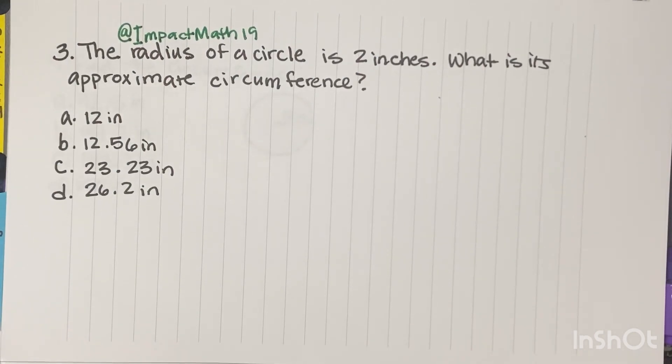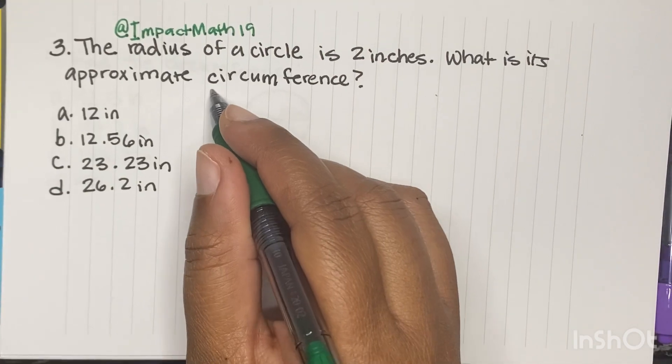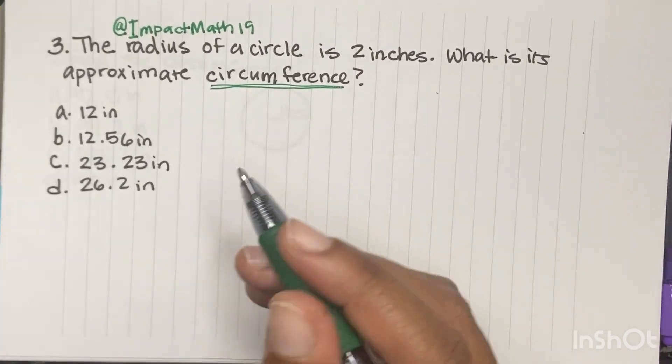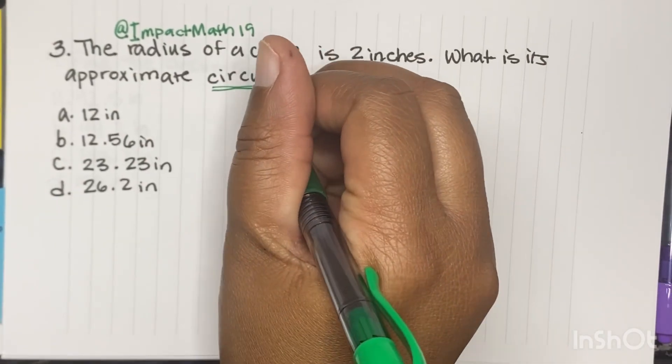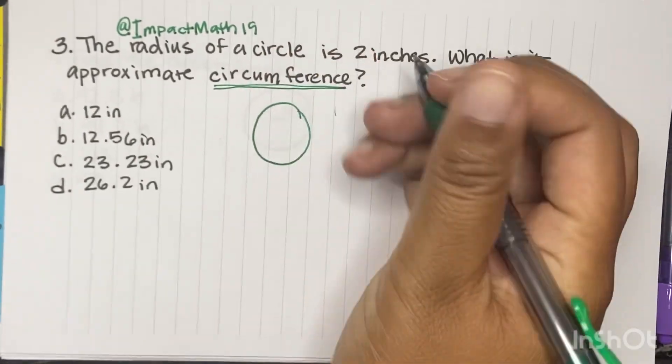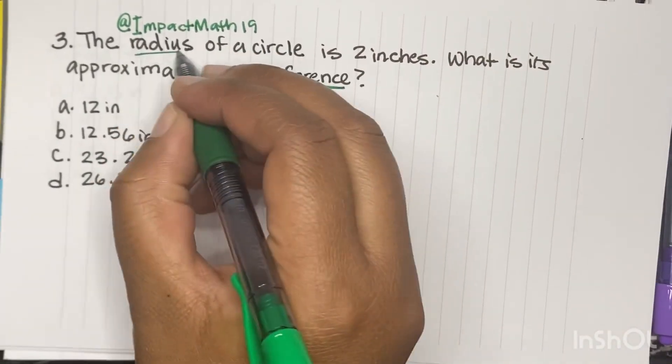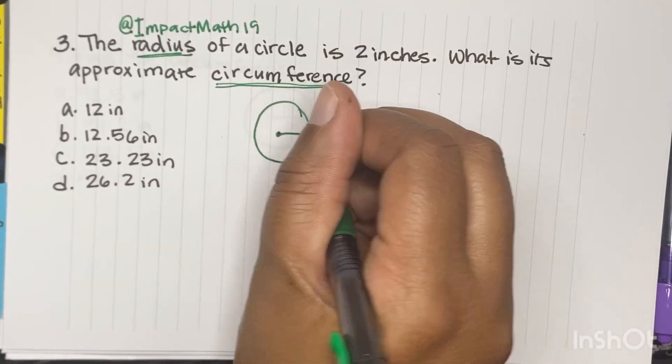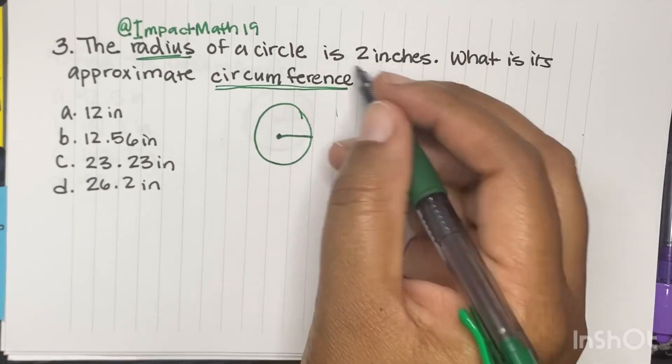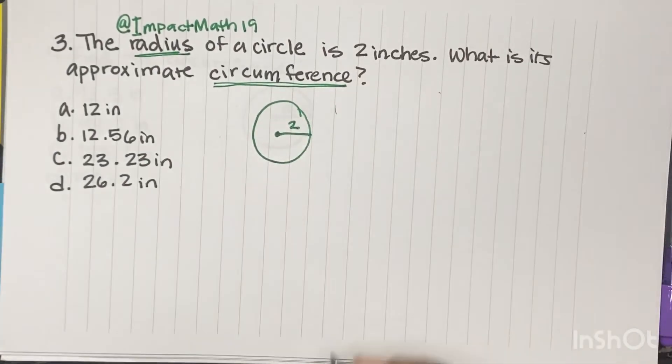The radius of a circle is 2 inches. What is its approximate circumference? That's some key words right there. So circumference, you have to understand that's the border of a circle. So if we draw the circle, and radius is another key word. It's a center point all the way to any edge. So the radius of a circle is 2 inches.